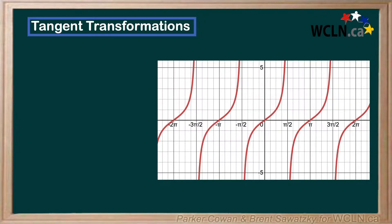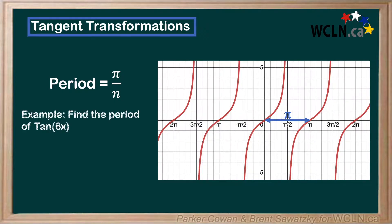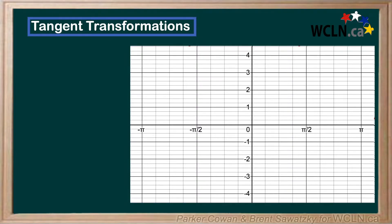Similar to sine and cosine, we simply take the period of tan, which we determined to be pi, and divide that by the coefficient. For example, given the function tan of 6x, the period will be pi over 6 because the coefficient inside the brackets is 6.